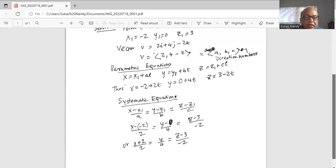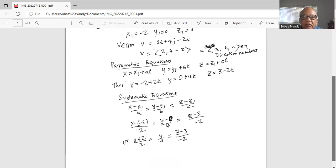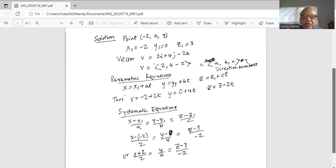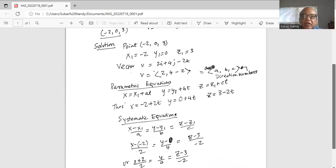So ultimately we get the symmetric equations as x minus minus two, x plus two, two minuses make it plus, divided by two. And then y divided by four. And z minus three divided by minus two. All of these are equal, being equal to t. So these are the set of symmetric equations for the line which passes through x1, y1, z1, and parallel to the given vector.